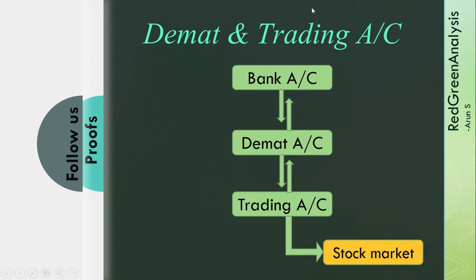First, the DMAT account and the trading account — these two are very mandatory. In a stock market, we will buy and sell. If you open these two accounts, you will also need a bank account, which is a normal savings account. Whether it is State Bank, ICICI, HDFC, etc., you will need a savings account.